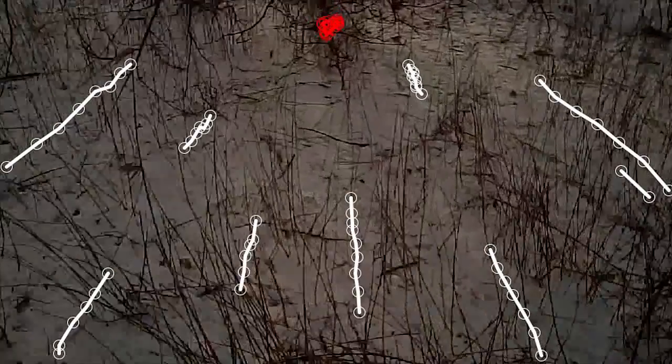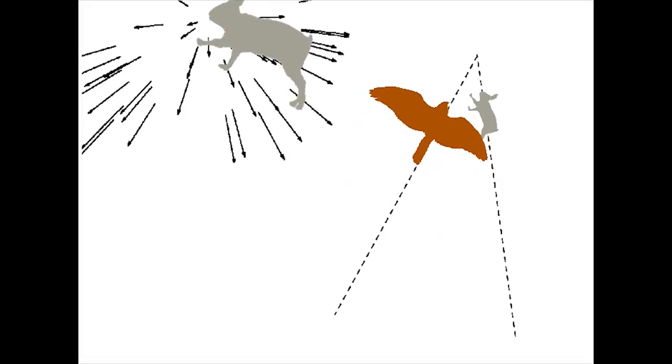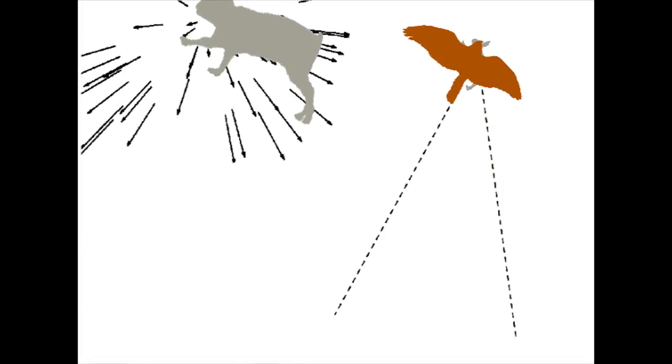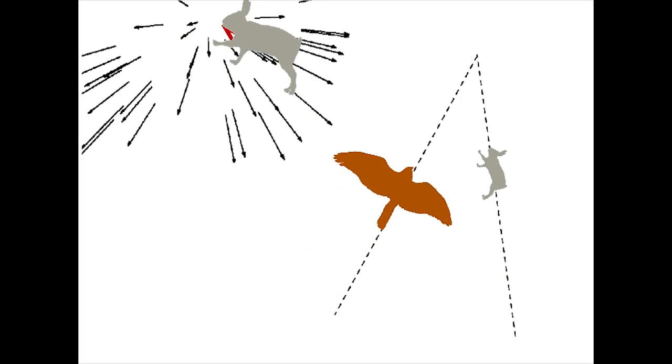Note that the goshawk swerves at the end to avoid colliding with branches. More generally, when the prey fled at an angle, the goshawk used constant absolute target direction, or CATD — a form of motion camouflage in which it follows the fastest interception trajectory while maintaining the prey's image on screen at a constant non-zero visual angle.